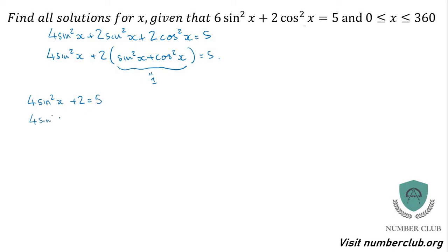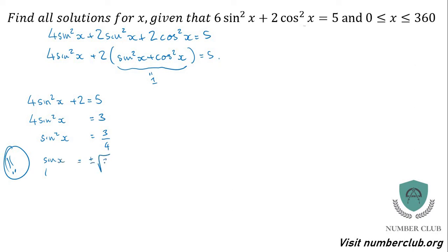So 4 sin²x equals 3, therefore sin²x equals 3 quarters. Now be really careful here — when we root this, we get two cases: the positive case, sin x equals positive root 3 quarters, and the negative case, sin x equals negative root 3 quarters. As soon as this happens, we need to take two different cases.